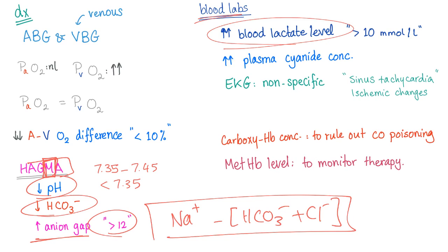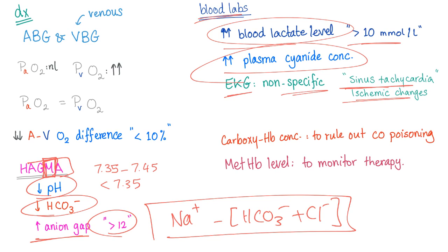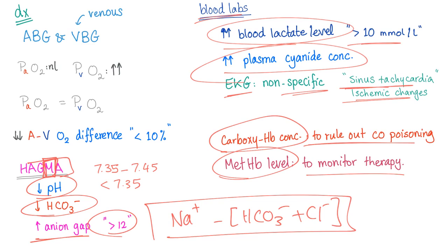Blood labs show increased blood lactate level greater than 10, and increased plasma cyanide concentration. EKG findings are non-specific, with sinus tachycardia being most common. Also check carboxyhemoglobin to rule out CO poisoning (both are common in fires), and monitor methemoglobin level to guide therapy — we don't want to give too much methemoglobin.